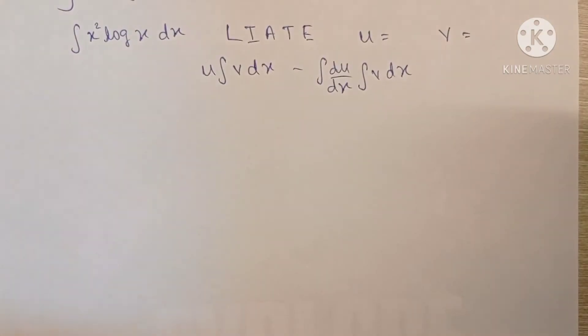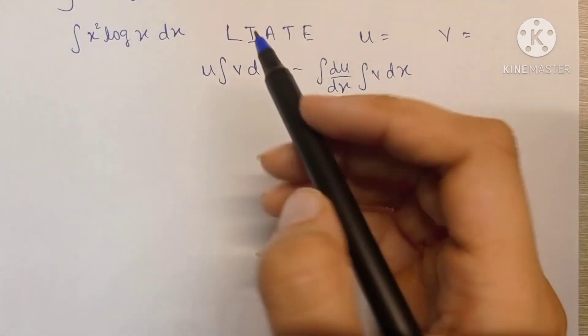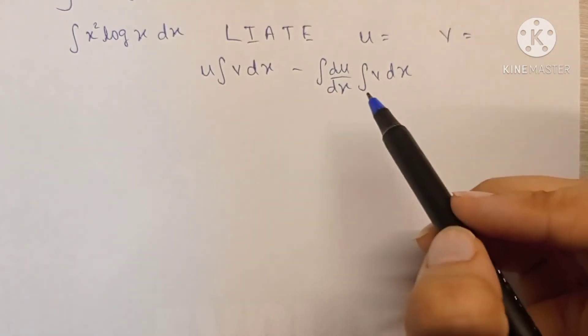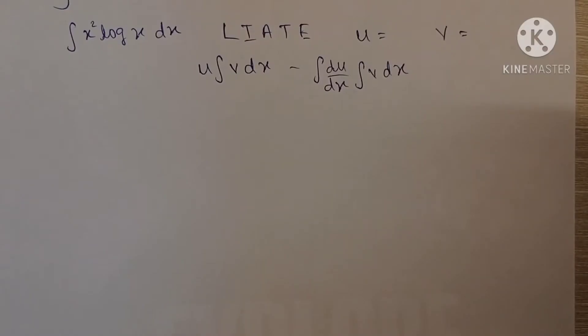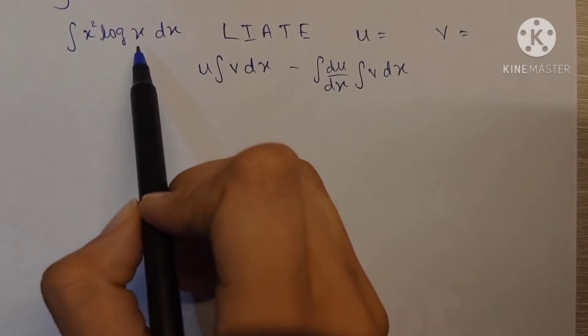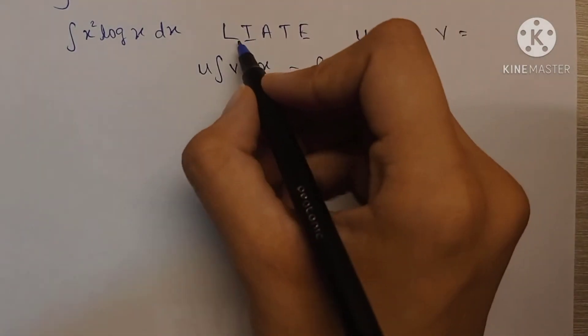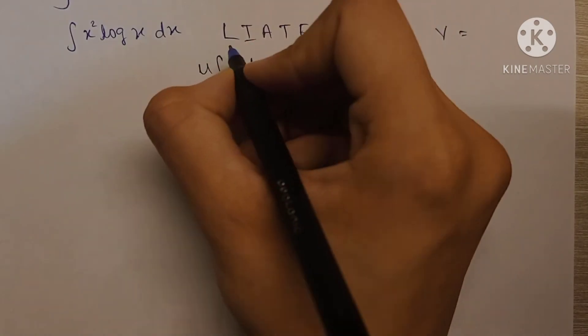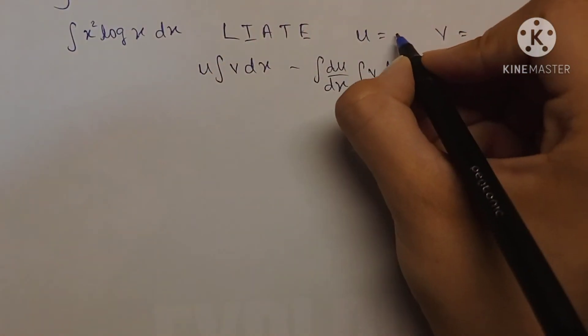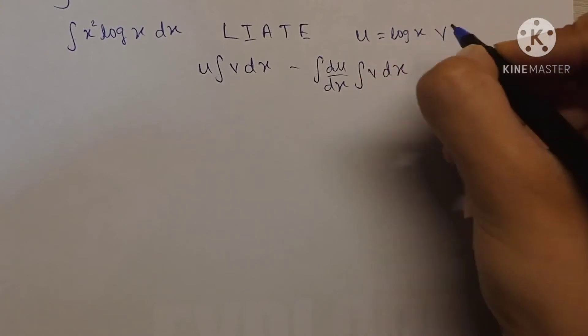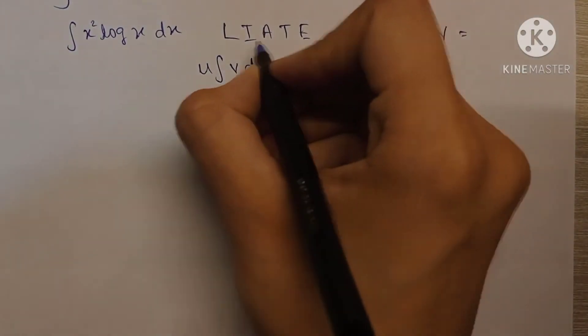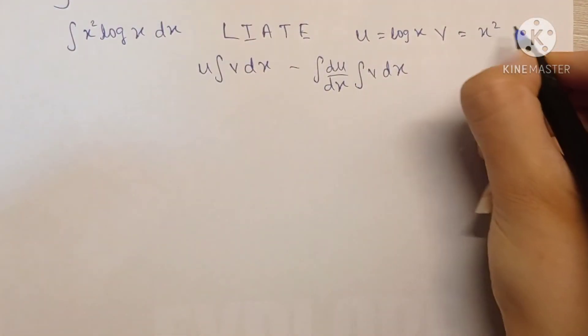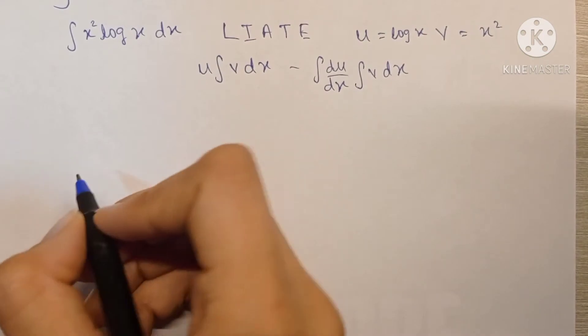Depending on which term of the integral is easier to integrate and which term is easier to differentiate, here our two terms are x square and log x. Since log comes before algebraic in the LIATE rule, we will keep the log term as the first term which is u, and we will keep the algebraic term x square as v. So now let's begin integrating.